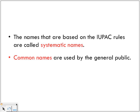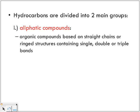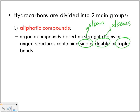The names used by IUPAC rules are called systematic names. Sometimes we'll refer to naming hydrocarbons in accordance with IUPAC rules. Most people outside the science field usually know them by certain common names. Hydrocarbons are divided into two main groups — the aliphatic compounds, which are organic compounds based on straight chains or ring structures containing single, double, or triple bonds. The alkanes are the single bonds; those containing a double bond are known as alkenes, and those with a triple bond are known as alkynes.